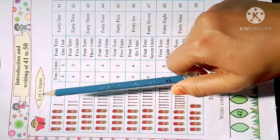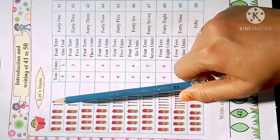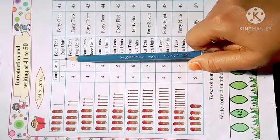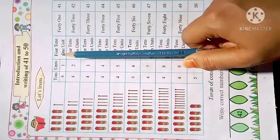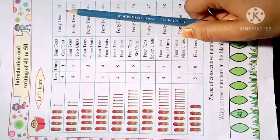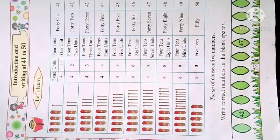Forty and one: forty one. Four tens, one unit. Forty one.